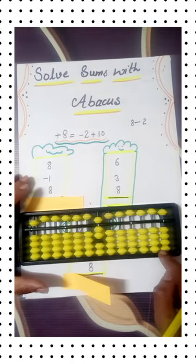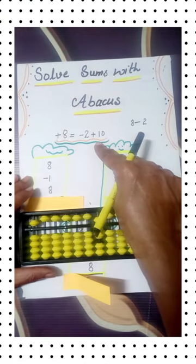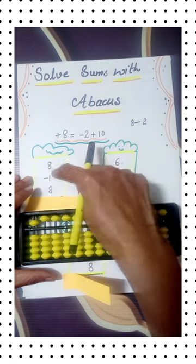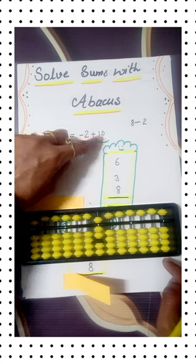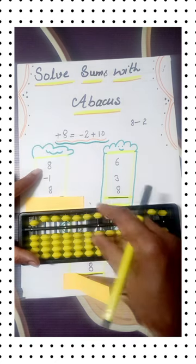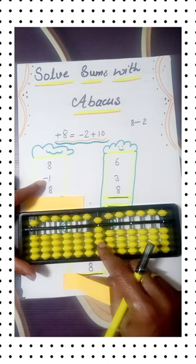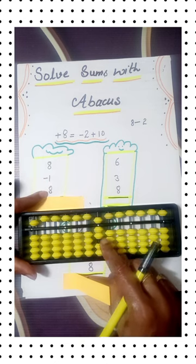Hello everyone, today we will learn a new formula for abacus and how to apply it in questions. Plus 8 is equal to minus 2 plus 10. First question: 8 minus 1, remove 1 plus 8.